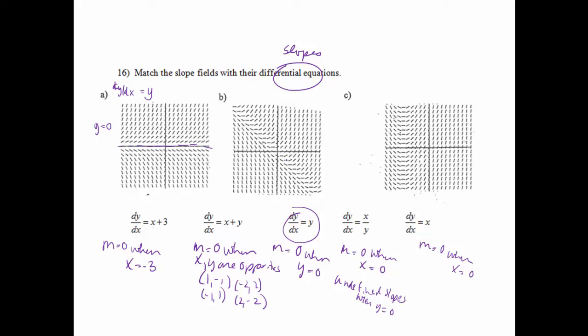Right, for b, I look at where my slopes equal 0, and it would be right along this line. And I notice that it's happening at (1, -1), (2, -2), (-1, 1), (-2, 2). It's when x and y are opposites, which we already found out would be this. So dy/dx equals x plus y.